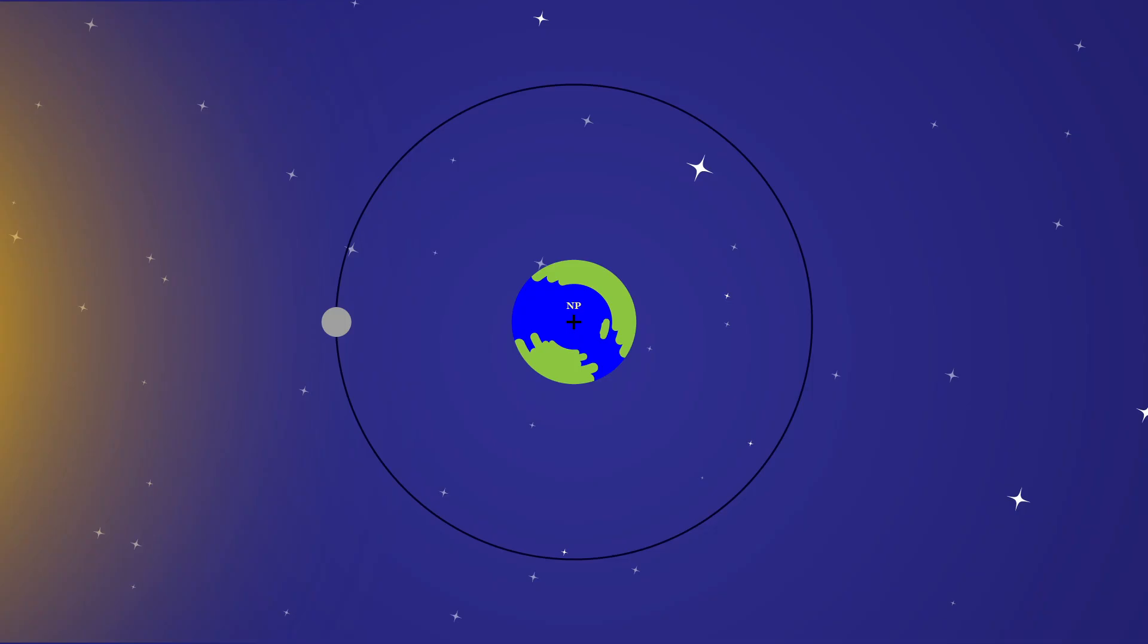We start with a view from the north celestial pole showing the direction of sunlight, Earth, and the moon in its orbit. From this perspective, the moon revolves around the Earth moving counterclockwise, and the Earth rotates counterclockwise as well.